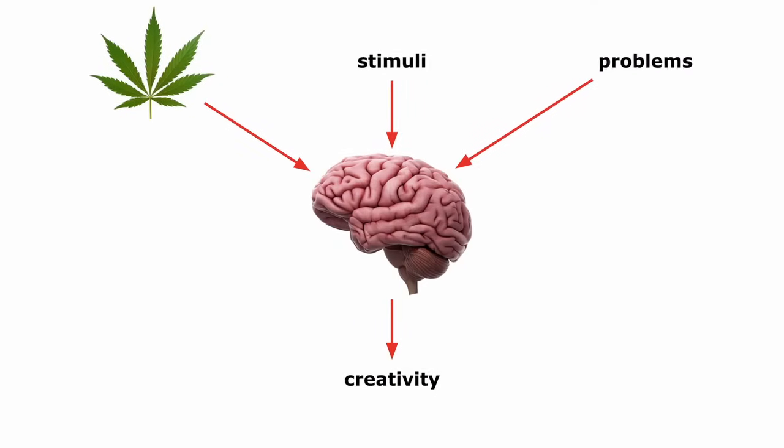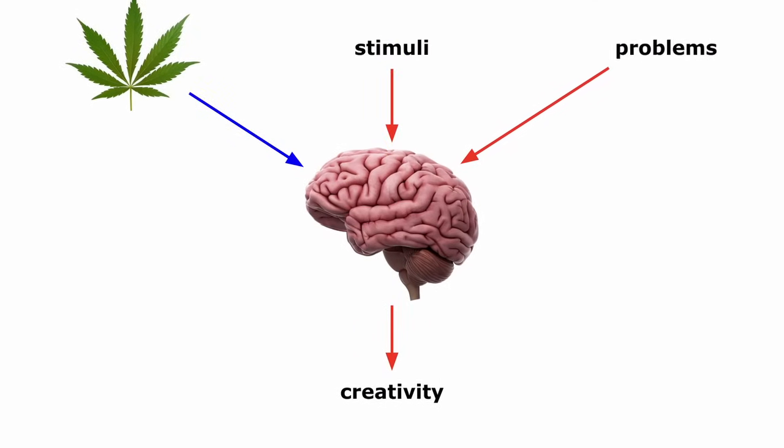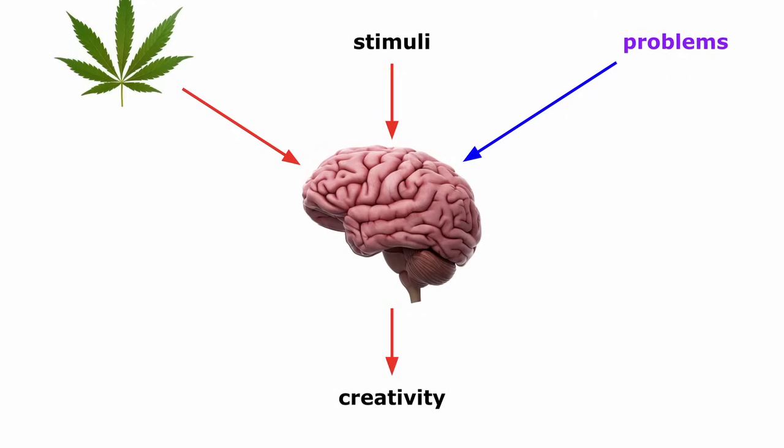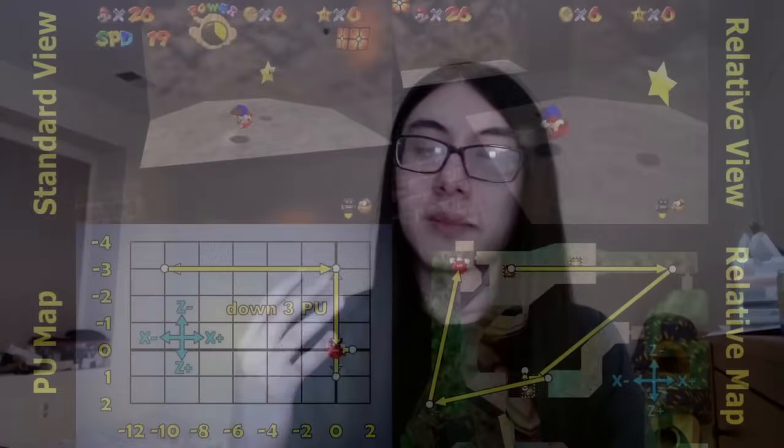So the point I'm trying to get at, beyond drugs, is that looking at creativity scientifically and looking at what's going on in the brain when we receive certain stimuli, whether it be drugs or just a hard problem to solve, can help us understand what we need to do to increase creativity. But before we can talk about the brain, we need to talk about creative problem solving. And that's a pretty broad term because it can go basically anywhere.